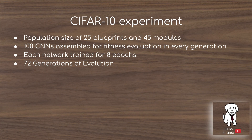They experiment with the CoDeepNEAT algorithm on the CIFAR-10 dataset, which contains 50,000 training images all sized 32×32, classifying them into categories such as dog, cat, airplane, and truck. They use a population size of 25 blueprints for macro architecture design and 45 modules for microarchitecture design, 100 CNNs assembled for fitness evaluation every generation. Probably one of the most surprising details is that each network is only trained for eight epochs before fitness evaluation, and overall they use 72 generations of evolution.